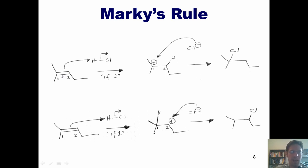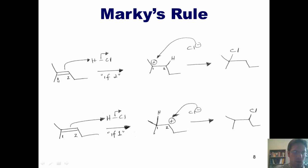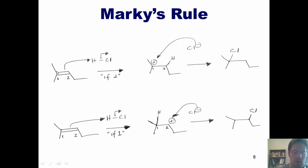When you take an alkene and add HX — in this case HCl — the hydrogen always ends up on the carbon that has more hydrogens, and the chlorine ends up on the carbon that has fewer hydrogens. Between carbons 1 and 2, carbon 2 has one hydrogen whereas carbon 1 has zero. Hence our hydrogen ends up on carbon 2 and our chlorine ends up on carbon 1.